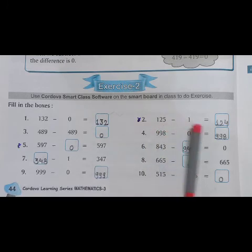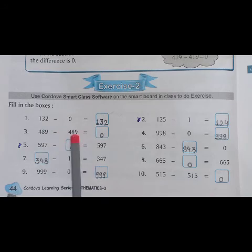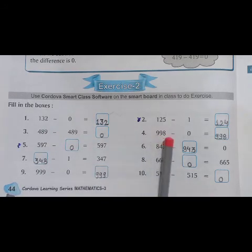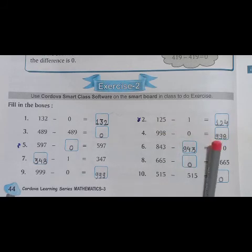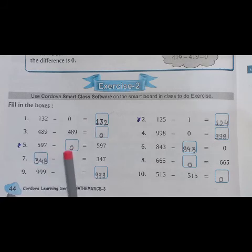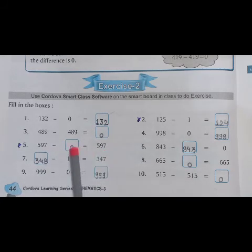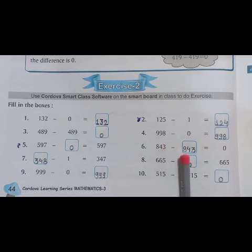Next question. 125 minus 1 equals to 124. 489 minus 489 equals to 0. 998 minus 0 equals to again this number, so answer is 998. 597 minus 597 equals to 0. 843 minus dash equals to 0, so 843.